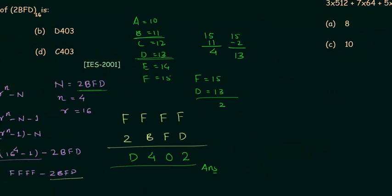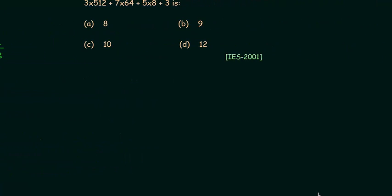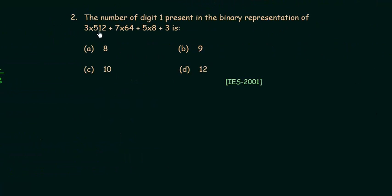Now we will move to problem number 2. We have to find the total number of digit 1 present in the binary representation of 3 multiplied by 512, plus 7 multiplied by 64, plus 5 multiplied by 8, plus 3. There are two ways to solve this problem: in the first method we find the binary equivalent of the decimal number, and in the second method we use a shortcut.